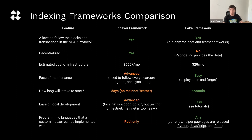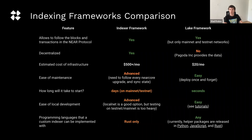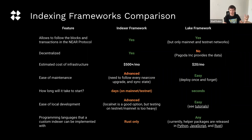For localnet, indexer framework is totally fine — the empty NEAR network is lightweight. But if you depend on some network state that becomes challenging. The key requirement indexer framework imposes is that it's only available in Rust, which we love, but we saw that as a limitation for some people. On the lake framework side, by design you can use any programming language that can make HTTP calls, since you just communicate over HTTP with the S3 buckets.